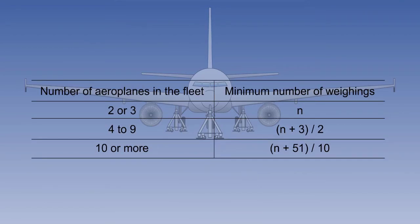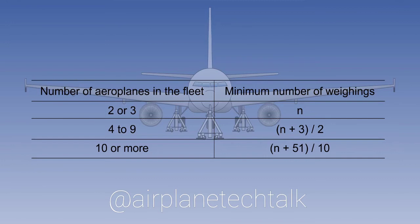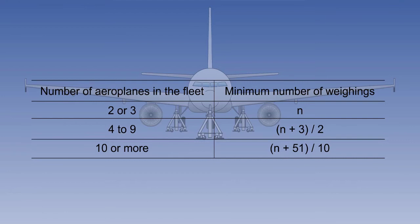In a previous lesson dealing with the regulations in EU Ops, the use of fleet masses was described. To establish a fleet value, a certain number of aeroplanes must be weighed during a period of two mass evaluations. The interval between two mass evaluations must not exceed 48 months. There is a table in EU Ops 1 which details the number of aeroplanes to be weighed to obtain fleet values.